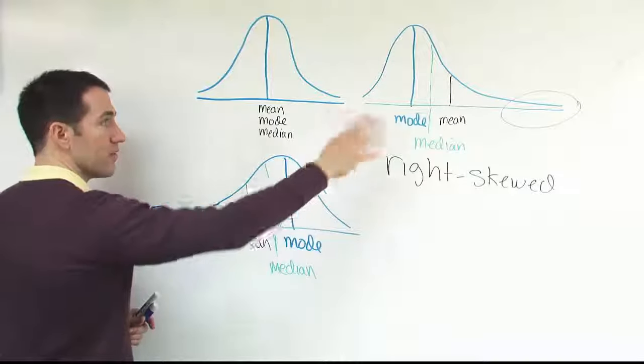Okay. So same logic as the curve over here. These very low values pull on the mean. The mode is where the peak is. The median is not as affected so it doesn't move all the way to the left like the mean does. And so, we call this guy left skewed.